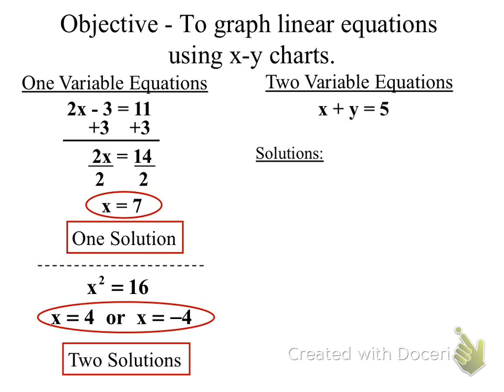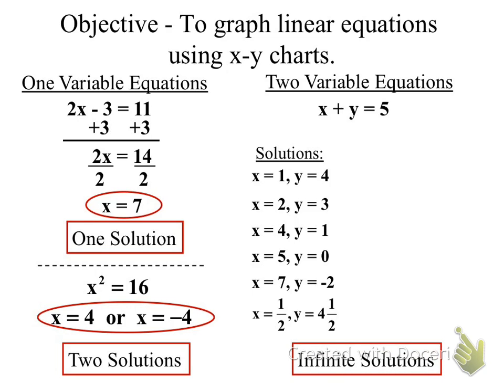When you have two variables, you have a number of answers. One plus four makes that true. Two plus three also works. How about three plus two? Four plus one? How about negatives? Four and a half plus one half makes five. Negative one half plus five and a half gives us five. There are a number of solutions to this.